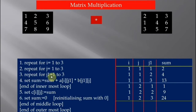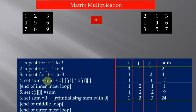Again the loop runs, and j1 is incremented to 3. Current sum is 4. We compute 4 plus a13 multiplied by b31. a13 is 3 and b31 is 3, so 3 times 3 is 9. So 4 plus 9 becomes 13. Now the innermost loop breaks because j1 has been exhausted from 1 to 3, giving sum equal to 13.